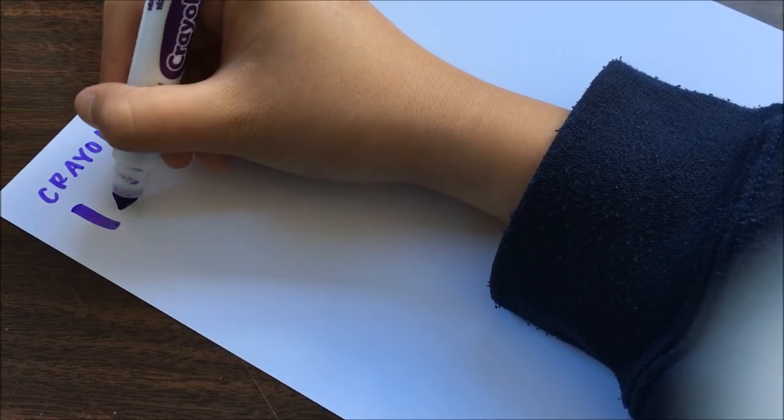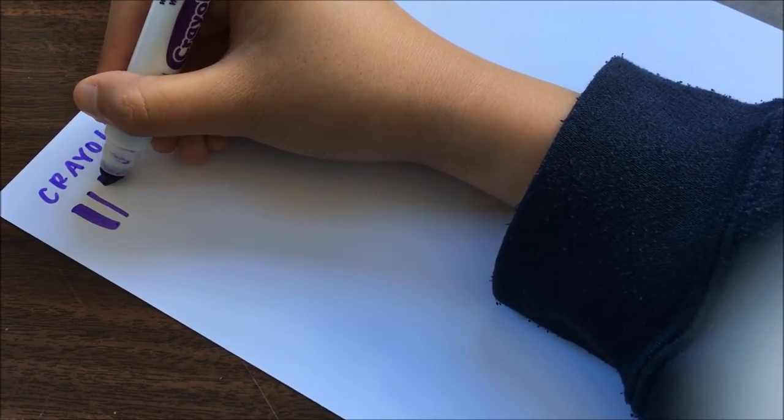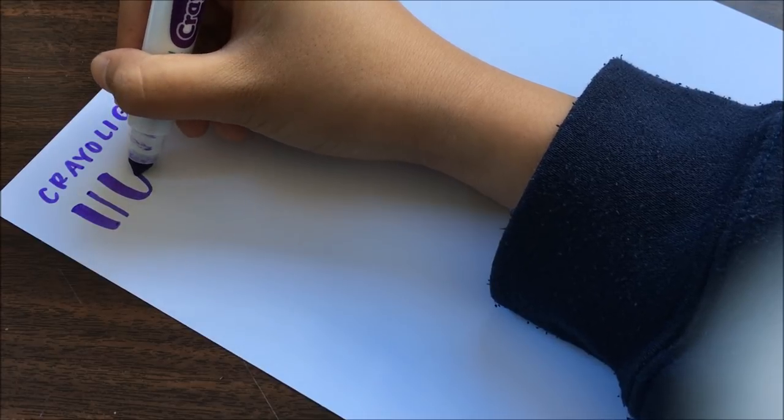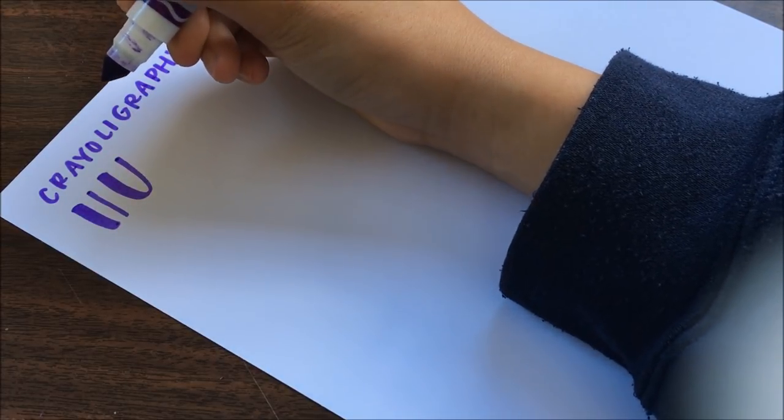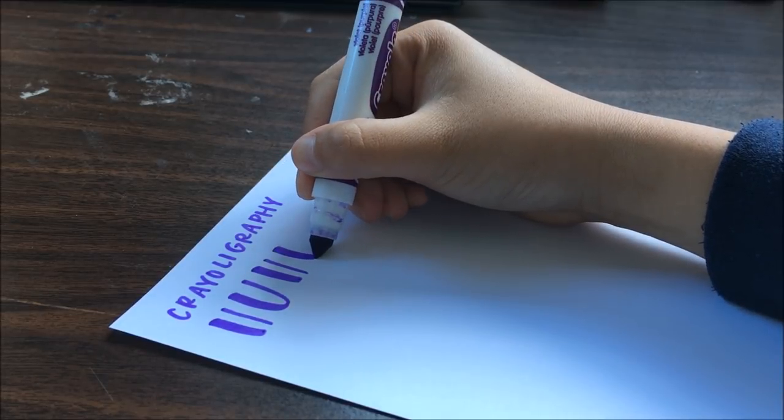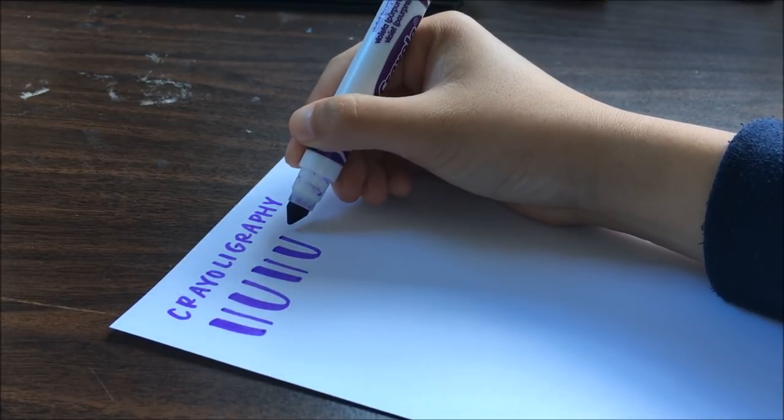To create thick downstrokes, as if you were using a brush pen, you'll need to apply a lot of pressure on the tips of the markers. Don't worry about ruining them, these marker tips are strong enough to take a lot of pressure.